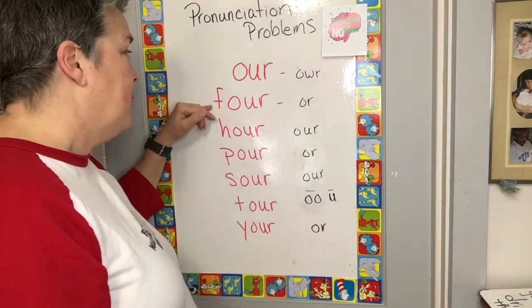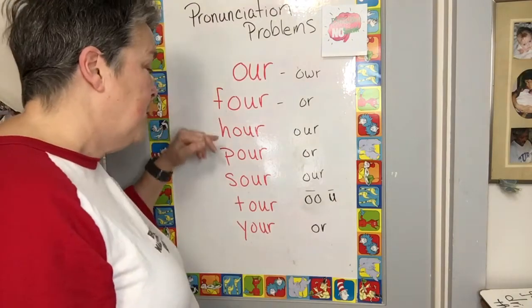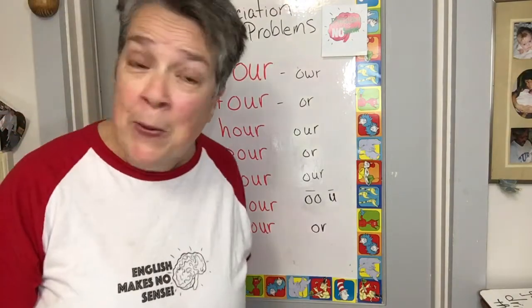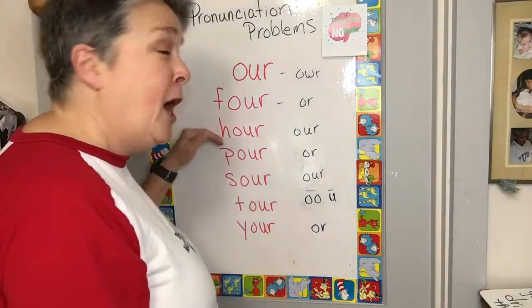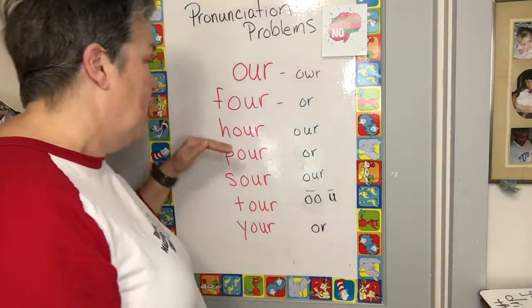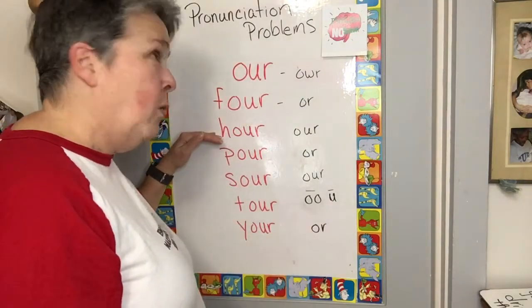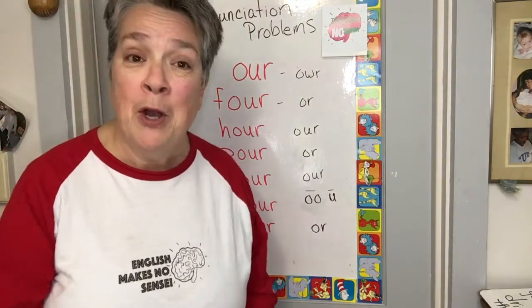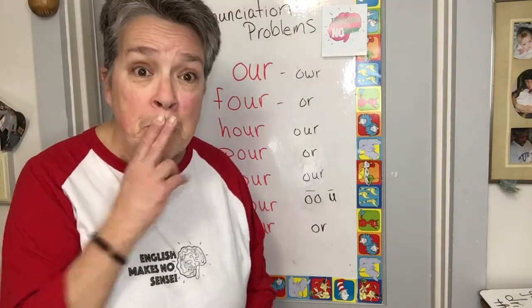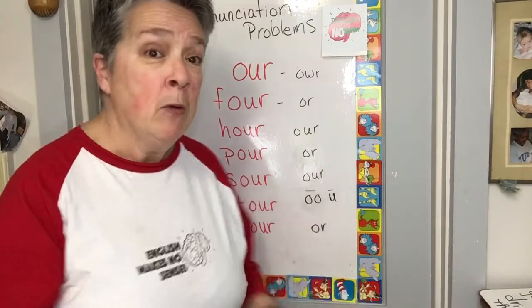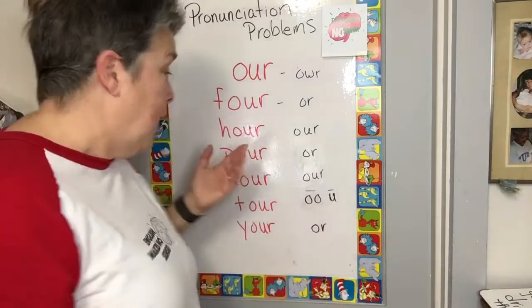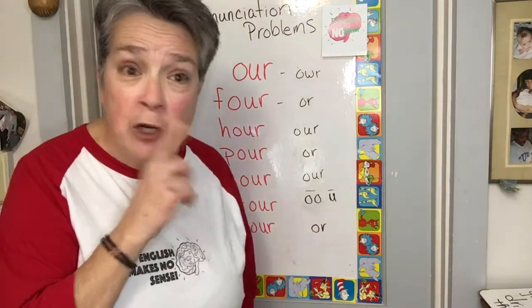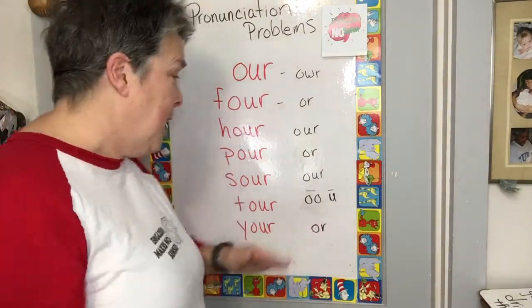Now, take the F off of 'for,' put an H on — we get... no, we get what? We get 'our' — no H. What? Yeah, why put an H? I don't know, but the H is silent. Shh, no H. Got it.